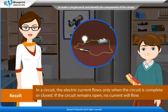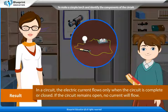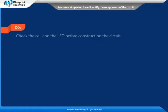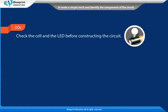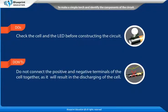Result: In a circuit, the electric current flows only when the circuit is complete or closed. If the circuit remains open, no current will flow. Do's: Check the cell and the LED before constructing the circuit. Don'ts: Do not connect the positive and negative terminals of the cell together, as it will result in the discharging of the cell.